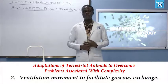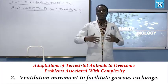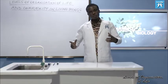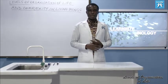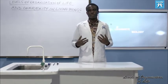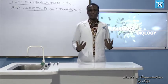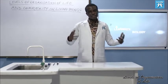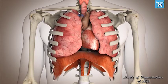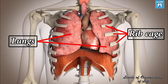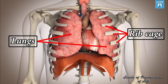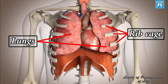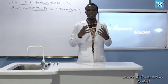Number two: ventilation movement to facilitate gaseous exchange — that is, breathing in and breathing out. Ventilation is the replacement of still air with fresh air. In vertebrates, the mechanism of breathing involves inhalation and exhalation — how the ribcage and diaphragm muscles contract and relax to reduce pressure in the thoracic cavity compared to atmospheric pressure, so that air is forced in through the nostril.